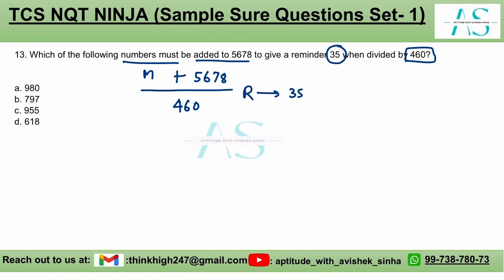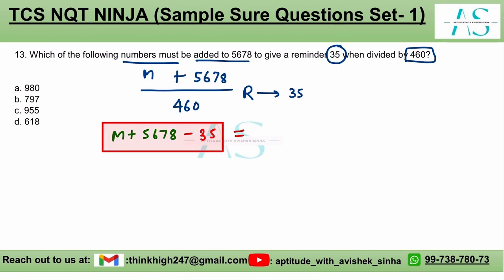Can we say: upon dividing by 460, the remainder is 35? So take out 35 from this value — m plus 5678 minus the remainder, that is 35. Now, since we are taking out the remainder, the remaining part will always be a multiple of 460. It is completely divisible by 460.